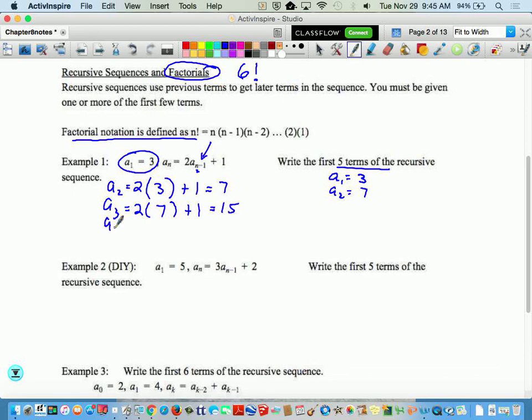And then a sub 4: 2 times 15 plus 1. So that's 31. So a sub 3 was 15, a sub 4 was 31.